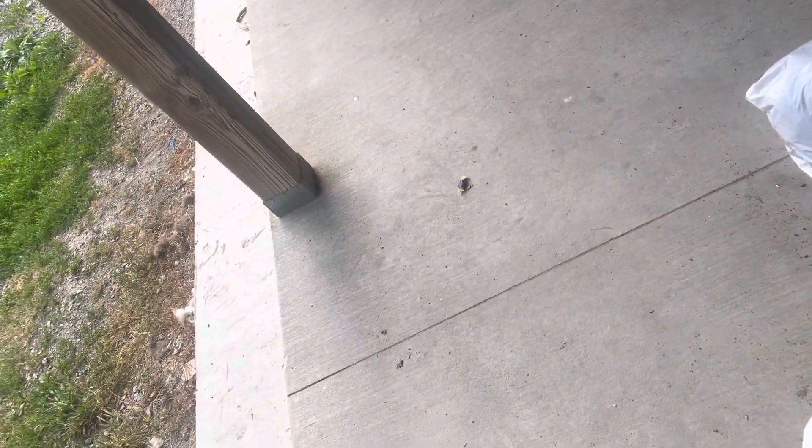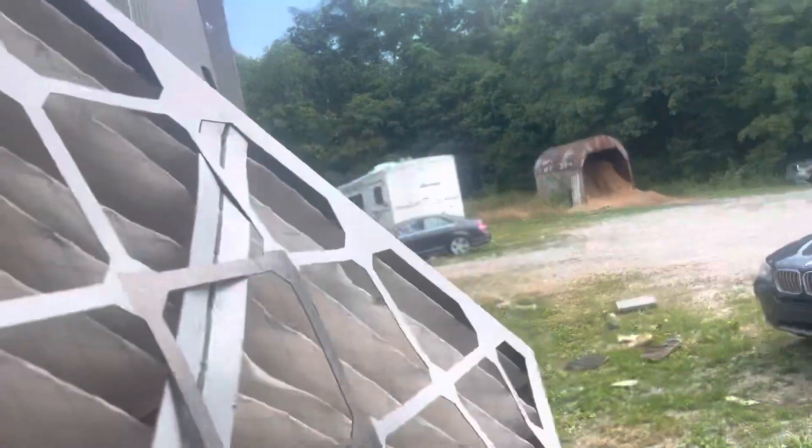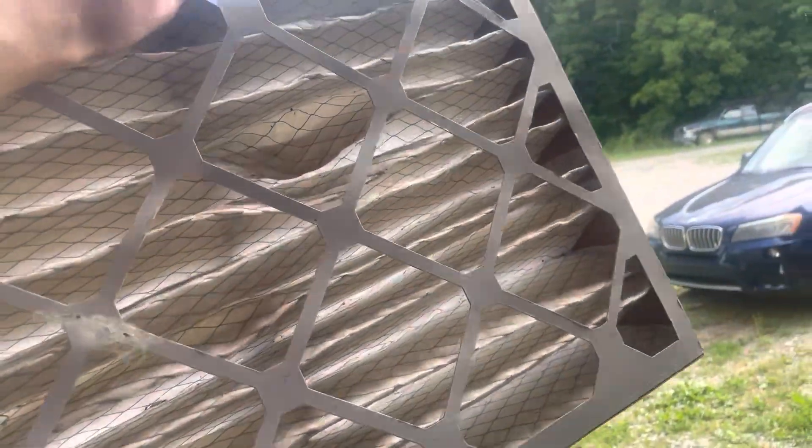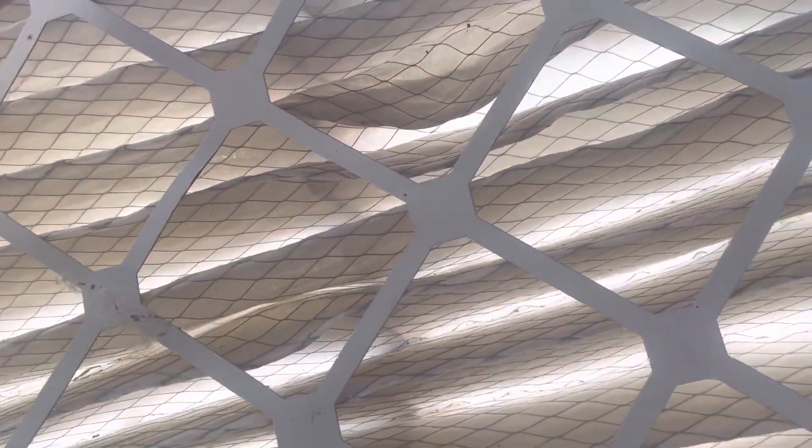As you can see it doesn't look terribly dirty, but if you look at the sides of it, you can see that it's kind of clogged with dirt and debris. Now this is actually the furnace filter that we had in Mon's unit. As you can see it looks pretty dirty from the look of it.